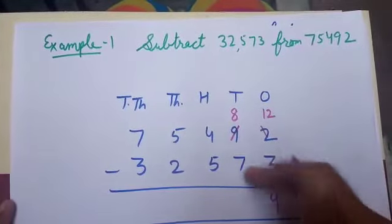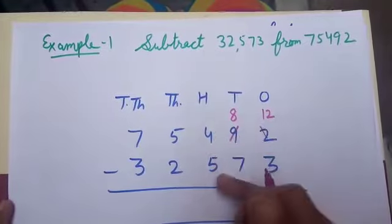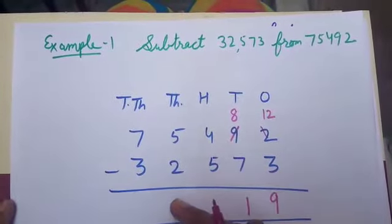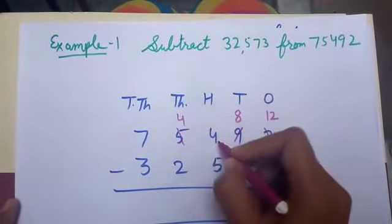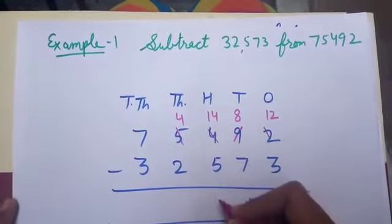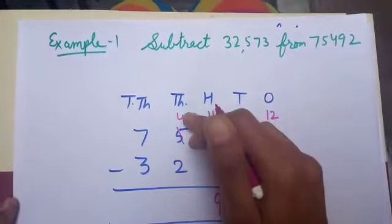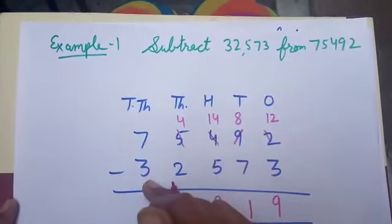8 minus 7, 1. 4 minus 5. But 4 is smaller than 5. So I borrow from 5. This 5 become 4 and this 4 become 14. 14 minus 5, 9. 4 minus 2, 2. 7 minus 3, 4.